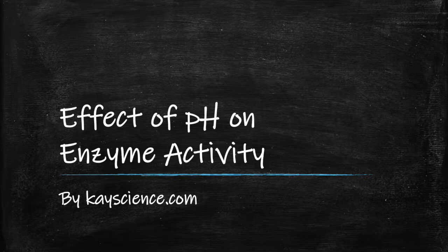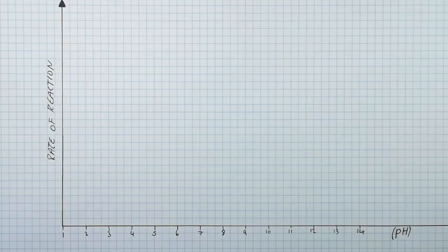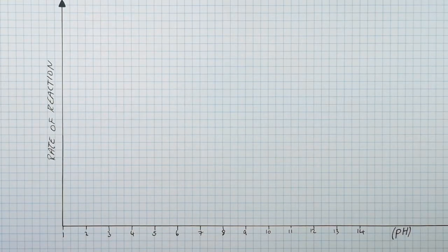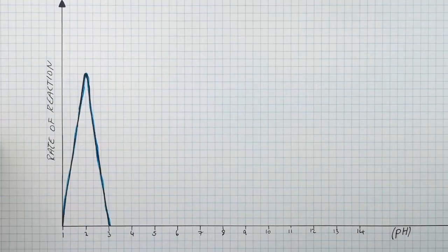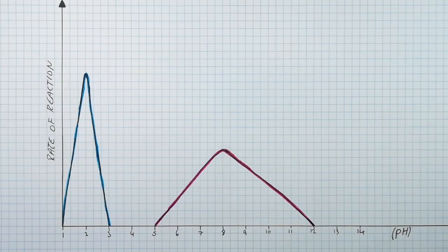The effect of pH on enzyme activity by kscience.com. This graph has rate of reaction along the y-axis and the pH along the x-axis. You've got enzyme A on this graph here and you've got enzyme B here.